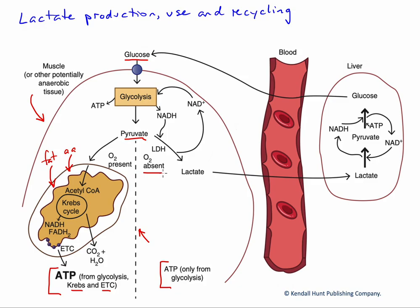When O2 is deficient, we're going to run this pyruvate toward the production of lactate. This is because oxygen is required through the mitochondrial reactions, and when it's absent, these reactions won't take place. The pyruvate would accumulate, and the outlet would be through lactate dehydrogenase to the formation of lactate. When oxygen is present, that pyruvate can readily enter the oxidative pathways, and we can produce ATP much more efficiently — more ATP per glucose.